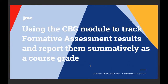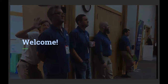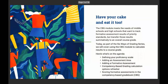Welcome to another installment of our six grading options in JMC. This is an exciting one — using the CBG module to track formative assessment results and report them summatively as a course grade. The CBG module meets the needs of middle schools and high schools that want to track formative assessment results of priority standards but transfer those results summatively to an overall course grade.